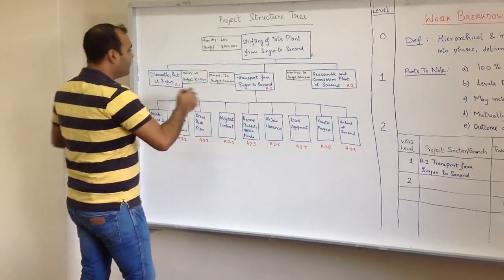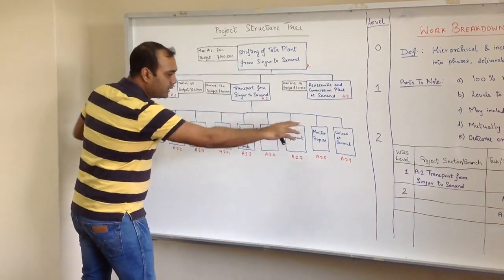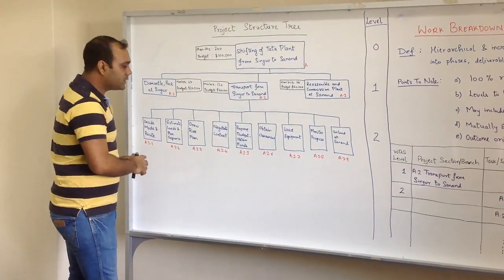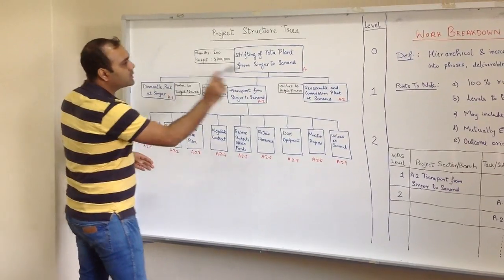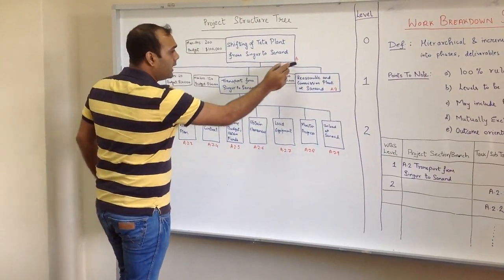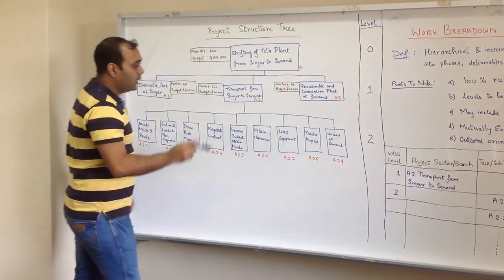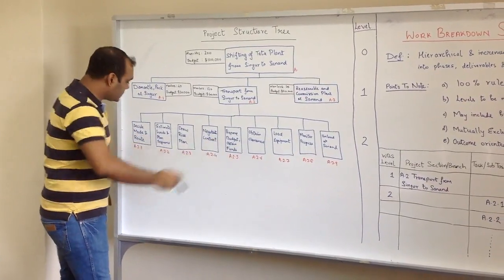As you can see, I've divided only this one into further work packages. Each of them has a nomenclature attached - it's very methodical. A is given here, then A1, A2, and A3, and from A2 all these arise: A2.1, A2.2, A2.3, and so on.